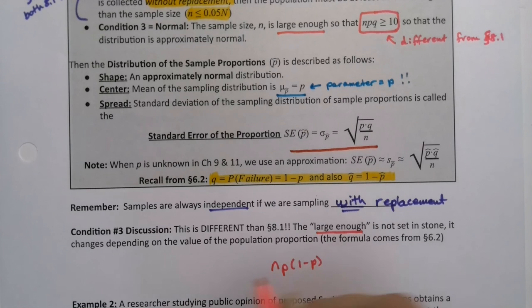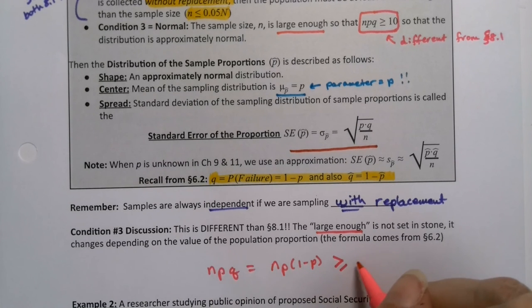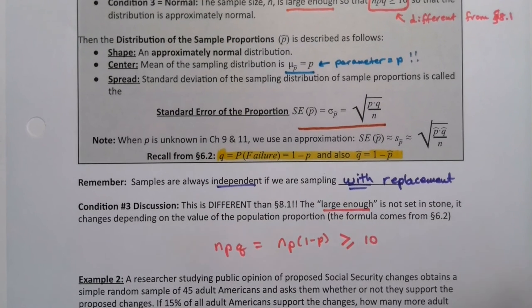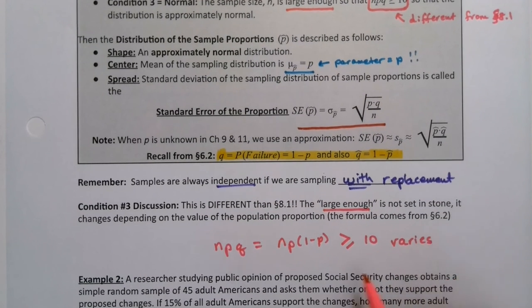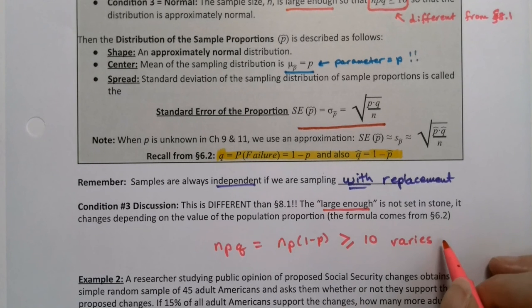It actually changes depending on the value of your population proportion. So it can be different from different values. So you just want N, P, 1 minus P, in other words, N, P, Q to be greater than or equal to 10. That's what you want. And that varies from group to group, population to population.